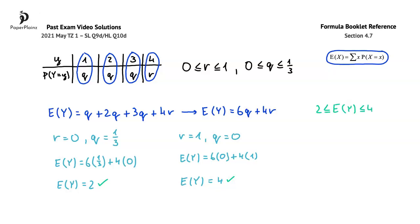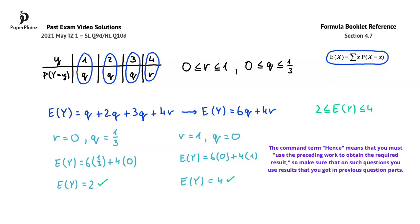An exam-taking tip that you can take away from here, is that the common term HENS means that you must use the preceding work to obtain the required result, so make sure that on such questions you use results that you got in previous question parts. This means that the common term HENS is not only a hint that you can use the result from the previous question part, but it actually tells you that if you don't use the result from the previous question part, you will not earn full marks.